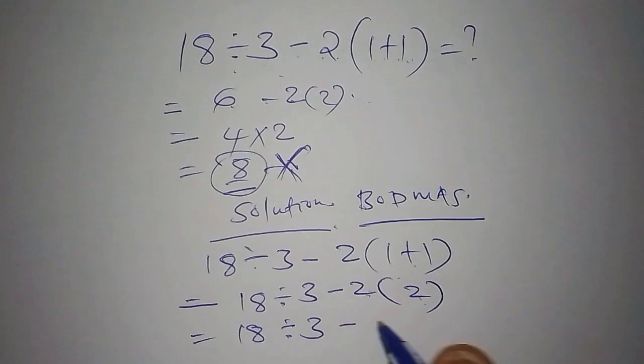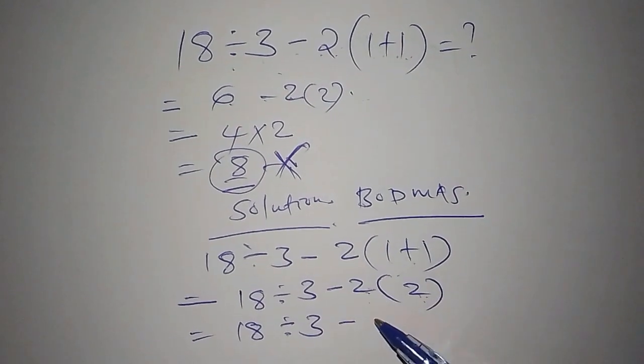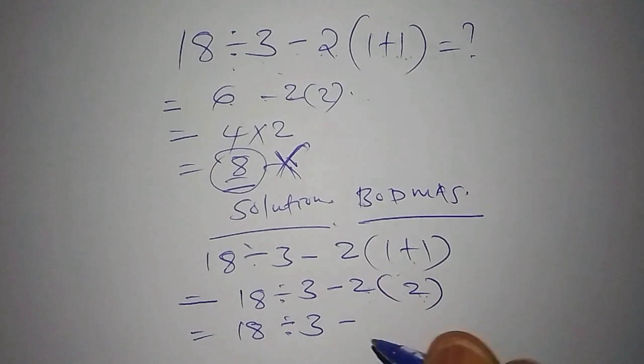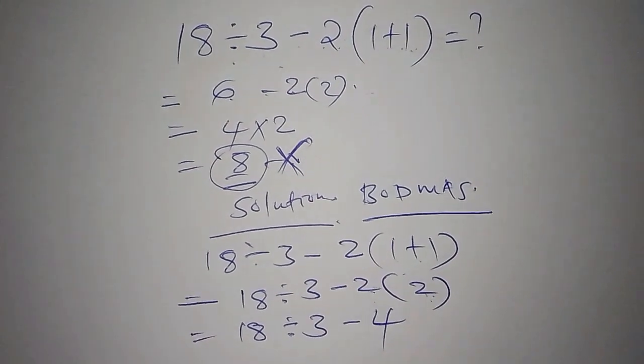Now we say that we open the bracket with the number inside the bracket, that is 2. So 2 multiplied by 2 and we shall have the answer as 4. Now, we are completely done working out the bracket.